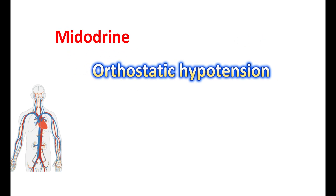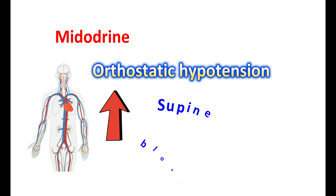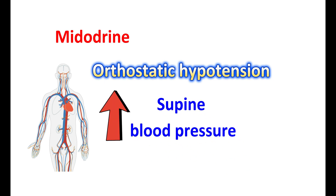Midodrine is particularly used for symptomatic orthostatic hypotension, but this medication can produce a marked elevation in supine blood pressure — the systolic blood pressure may increase to 200 mmHg. Therefore, it should be used in patients whose lives are impaired even after clinical care, non-pharmacological treatments, and lifestyle alterations. The patient should notice symptoms of supine hypertension like pounding in the ears, headache, blurred vision, and cardiac discomfort, and this medication should be discontinued if these develop.